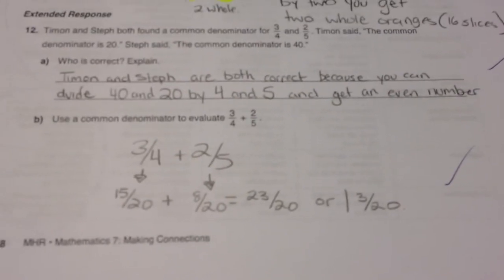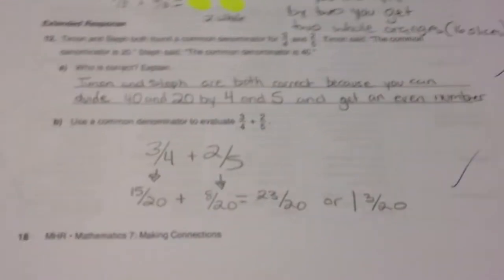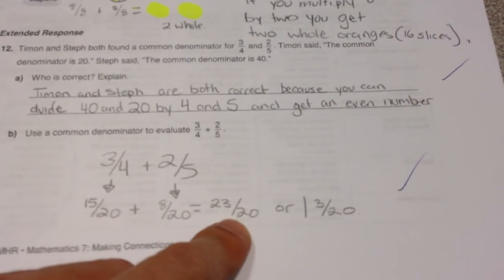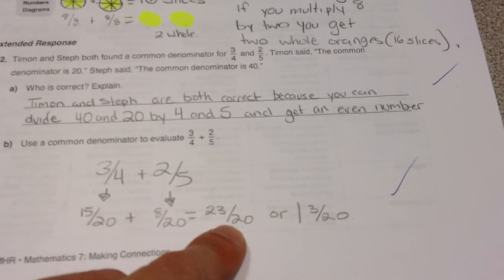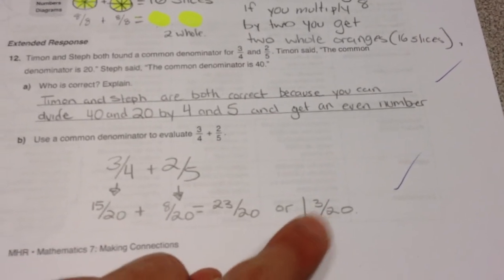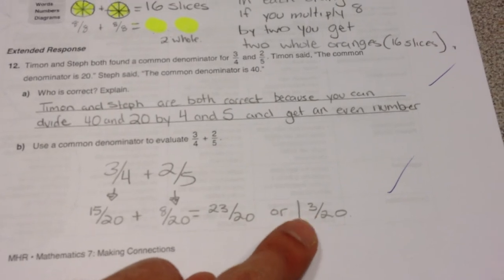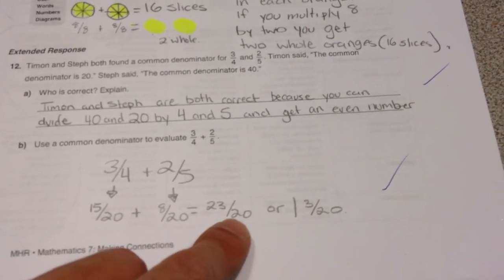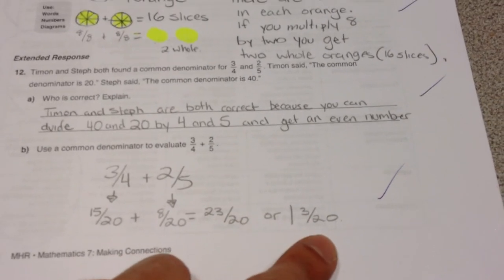And finally, to evaluate or complete the solution to 3/4 plus 2/5, we were looking for a creation of a lowest common denominator, and then a mixed fraction at the end turned into a mixed fraction from an improper fraction. 23/20 turning into 1 and 3/20.